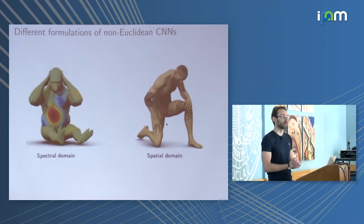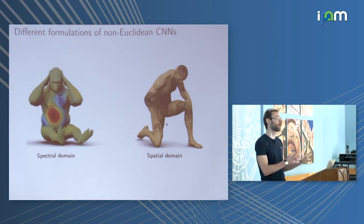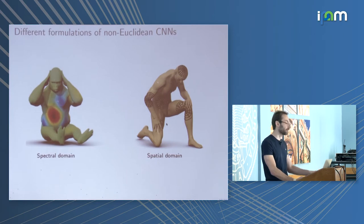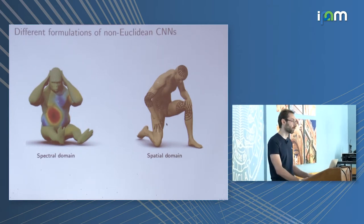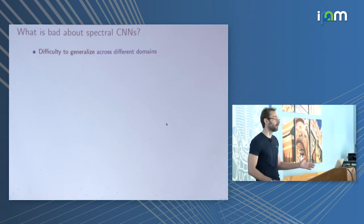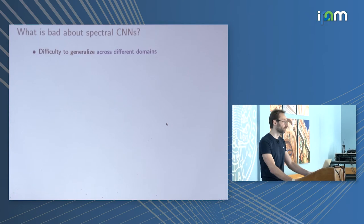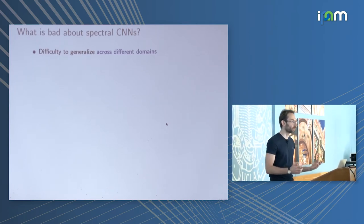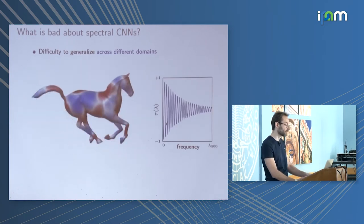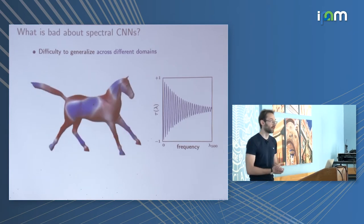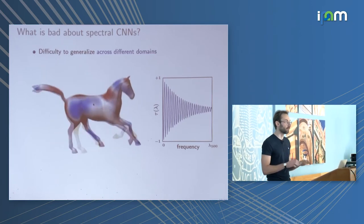You can construct generalizations of convolutional neural networks on non-Euclidean domains — in particular graphs and manifolds — in the spectral domain, replacing convolution by pointwise product of Fourier transforms. This works well on general graphs, but one limitation is that it's difficult to generalize these filters across different domains. If I have a fixed graph I can learn filters that work perfectly, but filters learned on one graph won't transfer to a very different graph.